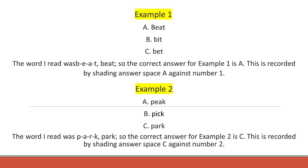Example 2. Park. The word I read was P-A-R-K. Park. So the correct answer for example 2 is C. This is recorded by shading answer space C against number 2. Now get ready to answer the rest of test 1 on your answer sheet. Start at number 1.